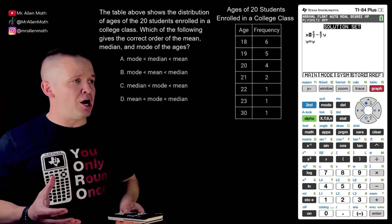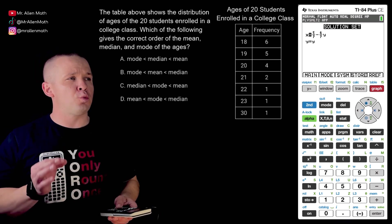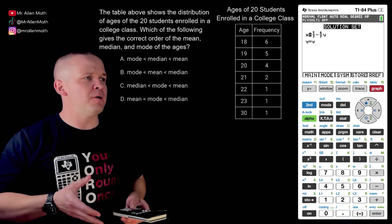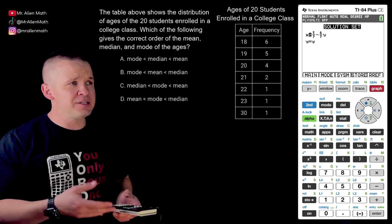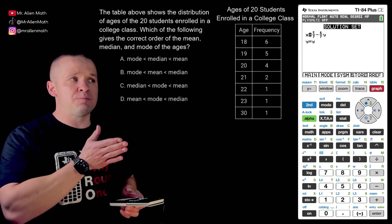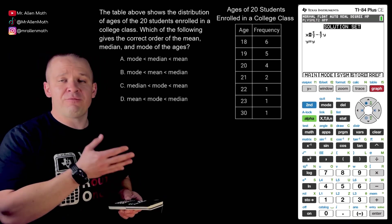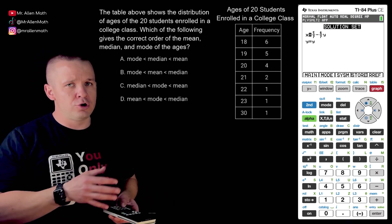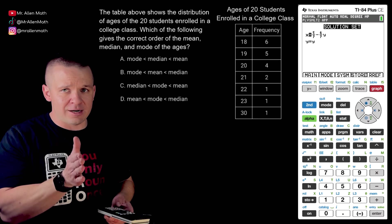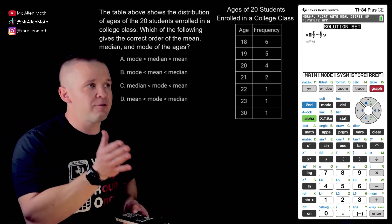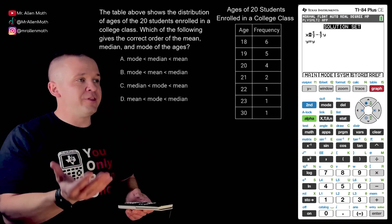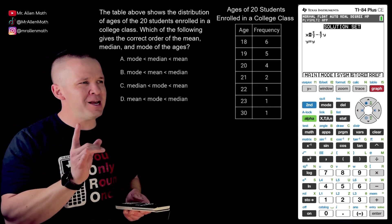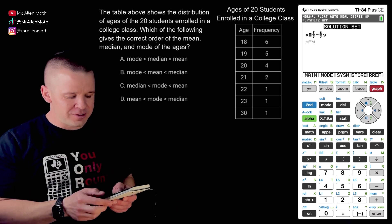So we have the table above shows the distribution of ages of the 20 students enrolled in a college class. Which of the following gives the correct order of the mean, median, and mode of the ages? And this is a frequency table here. So it's the age 18, there's six people. 19, there's five people or five students, whatever. Okay. So the total is 20 students. Now to do this problem you could go through and do it by hand. You'd have to do like 18 plus 18 six times plus the 19 times five, and then divide everything by 20. That's just for the mean. Then you got to kind of figure out the median. And the mode's pretty easy. The mode's 18, right. But the mean and the median take a little bit of work here. There's an easier way. Check this out.